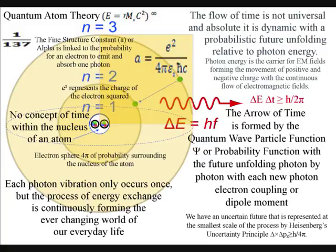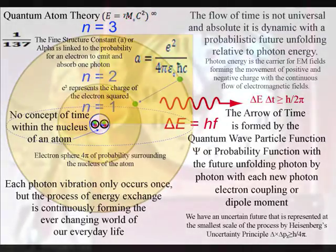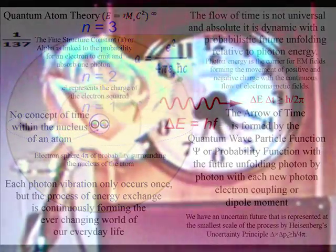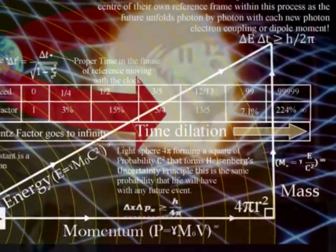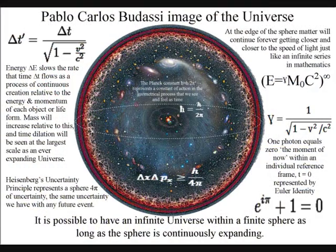In the theory explained in these videos, there is no such problem, because photon energy slows the rate that time flows as a process of continuous creation. Mass will increase relative to this, and the time dilation of relativity will be seen at the largest scale as an ever-expanding universe.